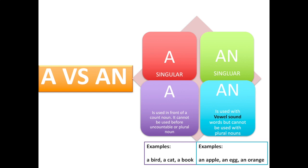Now an is similar, but we use an with vowel sound words. For example, we have an apple, an egg, an orange. You cannot say an apples or an eggs or an oranges.